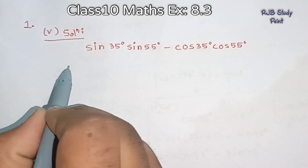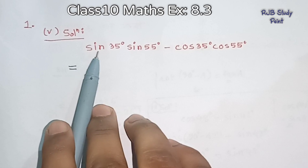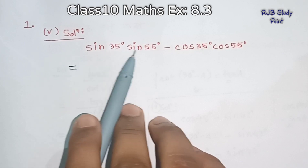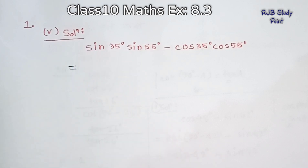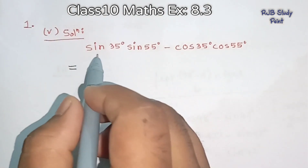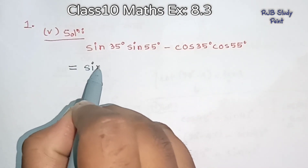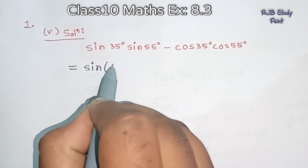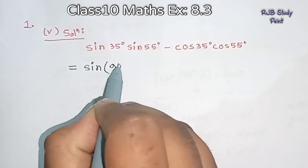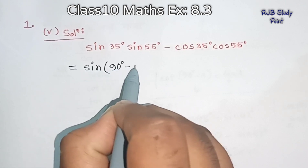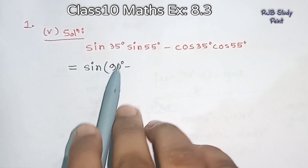We will now look at the second and third parts. We have to use the formula: sin(90 degree minus A). This complementary angle formula will be applied here.